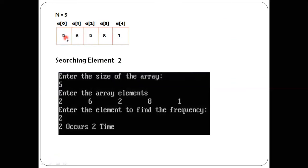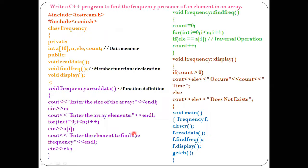Looking at the output: we gave five elements — two, six, two, eight, one. Two is stored in a[0], six in a[1], two in a[2], eight in a[3], and one in a[4]. We searched for the number two, which occurs in two different places — so two occurs two times. The operation performed here is called traversal — the process of visiting each item exactly once to perform some operation. Thanks for watching this video.